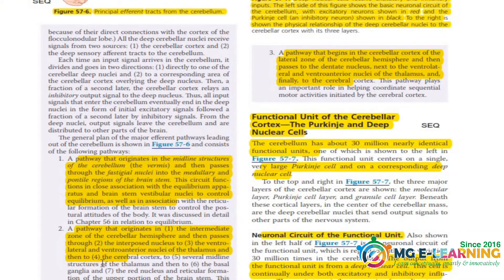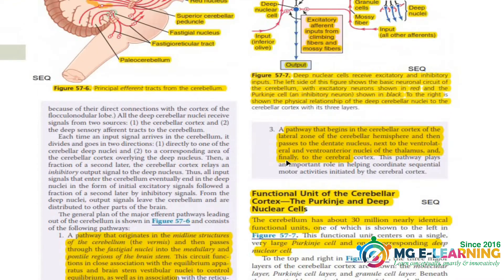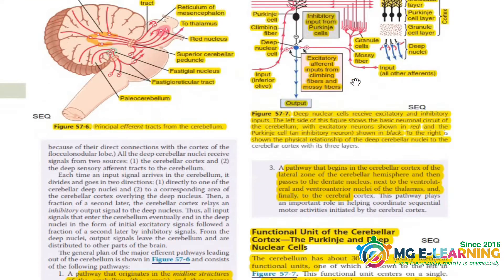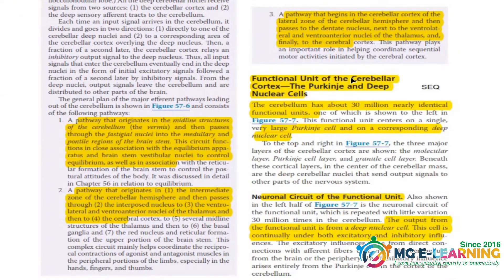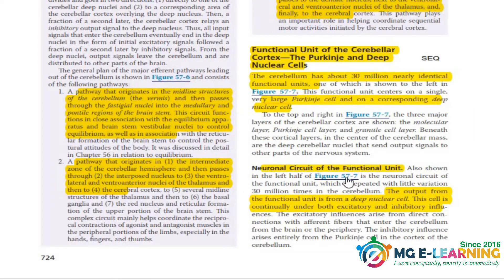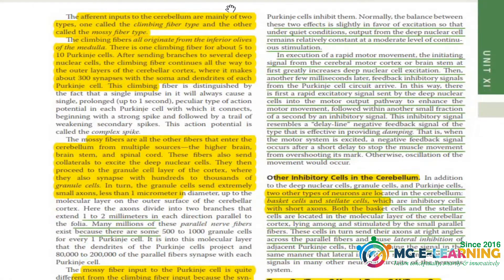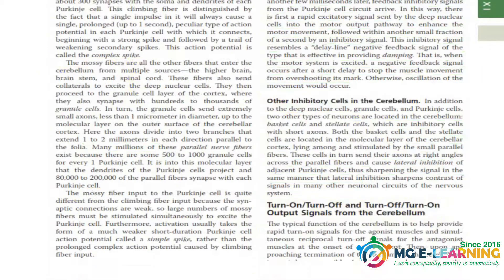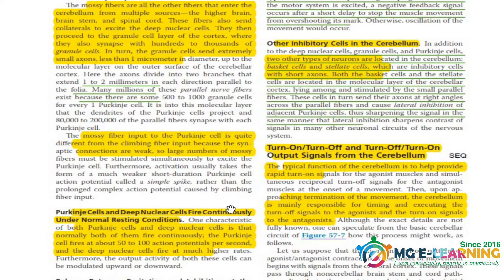Now is the functional unit of the cerebellar cortex — the Purkinje and the deep nuclear cells. This is the explanation of Figure 57.7. This diagram is very very important as a SEQ in the paper and it can also have many points for your MCQ, so you have to do this topic thoroughly. The neuronal circuit drawn in Figure 57.7 has very important points for your MCQs — do the Purkinje cells and the deep nuclear cell section very well.